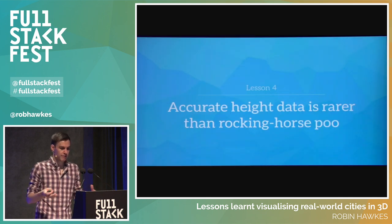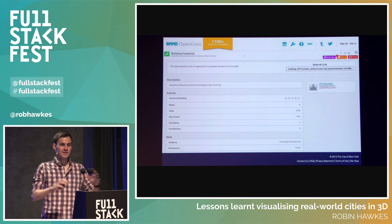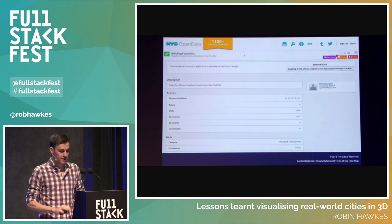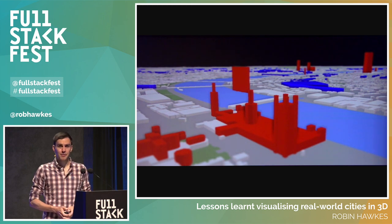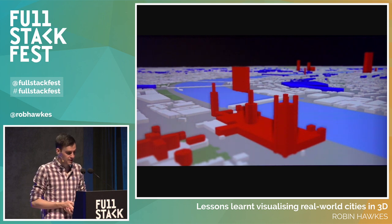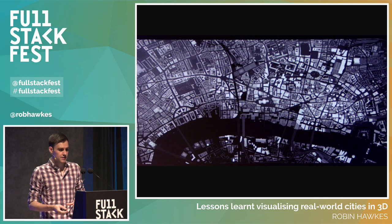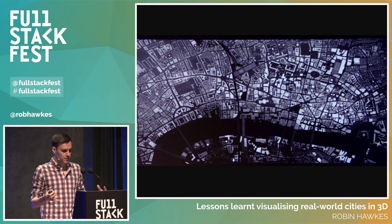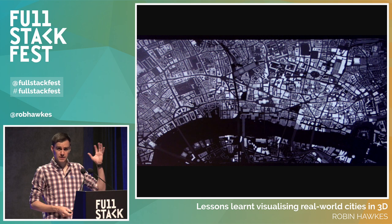Lesson four: accurate height data is rarer than rocking horse poo. If I lived in New York City I wouldn't really have a problem, because they've decided to give away all their height data for all their buildings for free. In the UK it's much harder to find building heights. OpenStreetMap has varying levels of height detail, and you can couple it with an educated guess to predict heights for other buildings. But if you're from the UK, there is good news — the Environment Agency released LiDAR height data for most of the UK, giving you centimeter-accurate height level data for both buildings and terrain, all for free. My hope is that other countries follow suit.